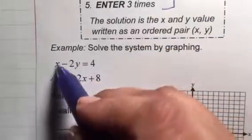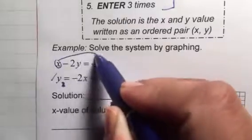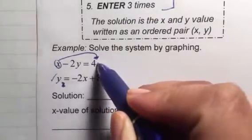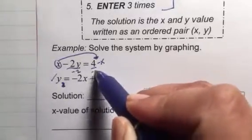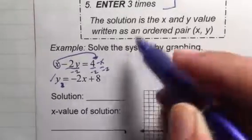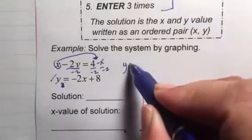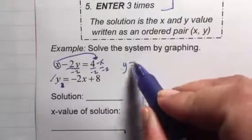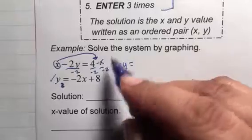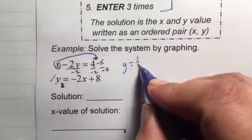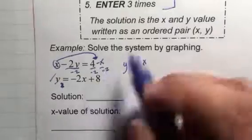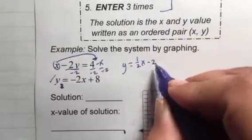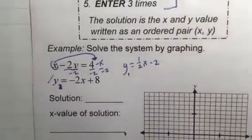From Monday, we learned we move the x, change the sign, divide by the number in front of the y. So this equation would be y equals negative 1 divided by negative 2 is 1 half. And then 4 divided by 2 is negative 2. And that would go into y1.